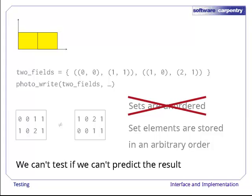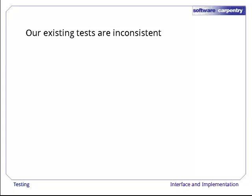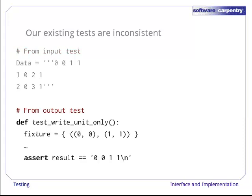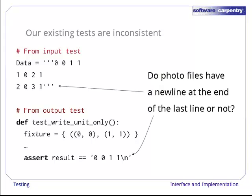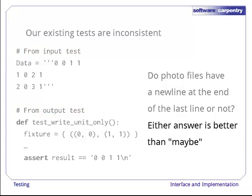One final lesson for this lecture. You probably haven't noticed, but the tests we've written in this episode are inconsistent. Here's the fake file we created for testing the photo reading function. And here's the string we used to check the output of our photo writing function. Please take a moment and see if you can see the inconsistency. That's right. One string has a newline at the end, and the other doesn't. It doesn't matter whether we require this or not. Either convention is better than saying maybe, because if we allow both, our code becomes more complicated and more testing will be required.